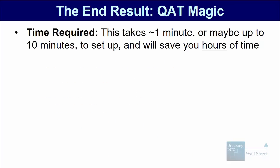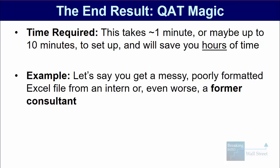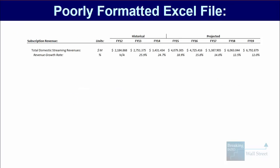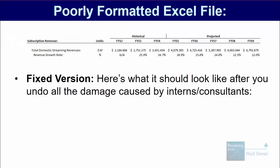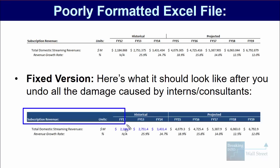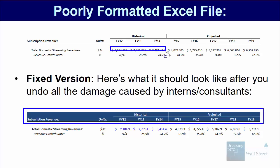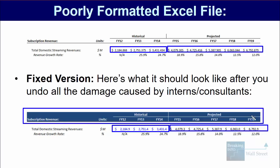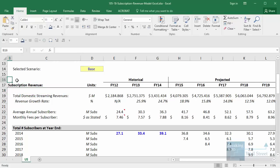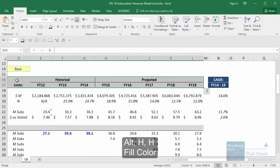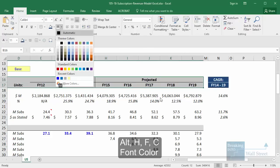This takes about one minute to set up if you import our quick access toolbar, or up to 10 minutes if you set it up yourself, and it's going to save you hours of time each week. For example, let's say you get a messy, poorly-formatted Excel file from an intern, or even worse, from a former consultant going into banking. Here's what it should look like when you're done — the correct fill color, font color, borders, and in the number area, blue for hard-coded numbers and black for actual formulas, with the correct decimal places and column widths. Using the built-in shortcuts, you'd select everything and go through Alt-H-H to change fill color, Alt-H-F-C to change font color, and so on.